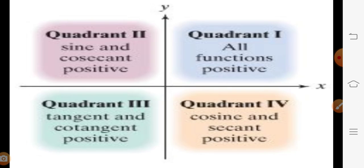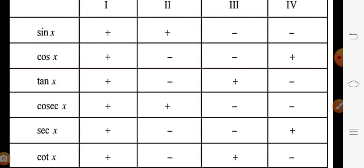Let us recall: in the first quadrant, all trigonometric ratios are positive. In the second quadrant, sine and cosec are positive and the remaining four are negative. In the third quadrant, tan and cot are positive and the rest are negative. In the fourth quadrant, cos and sec are positive and the rest are negative. We are familiar with this chart from the previous presentation — in which quadrant which t-ratio is positive.